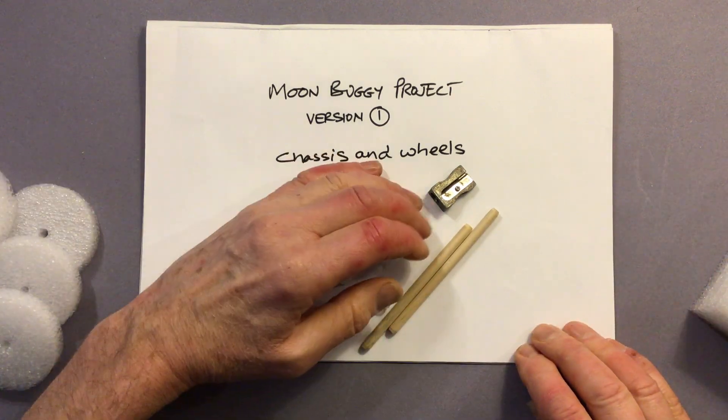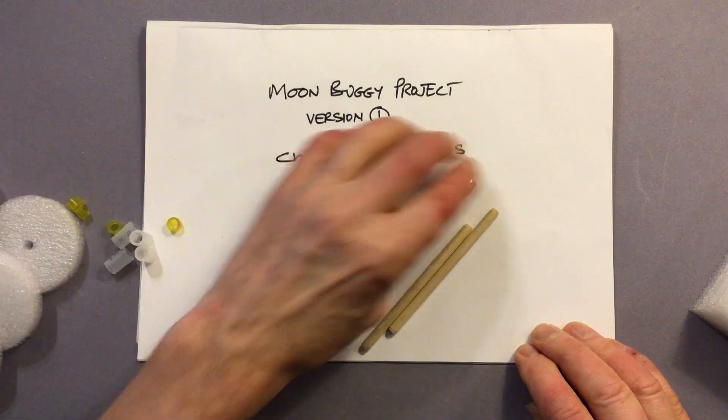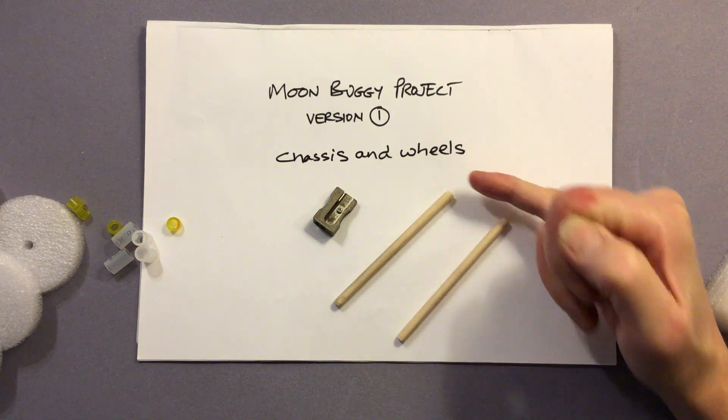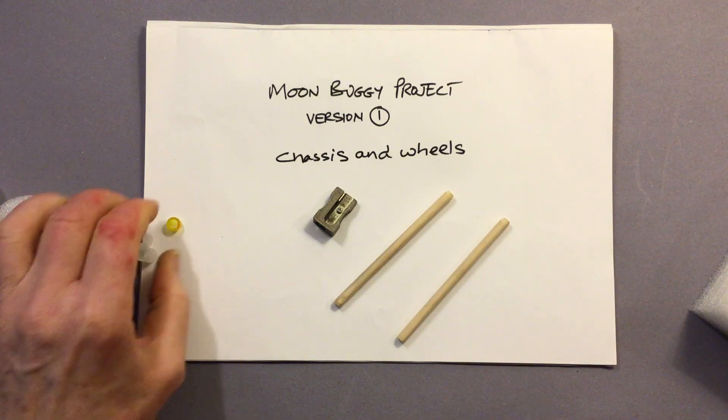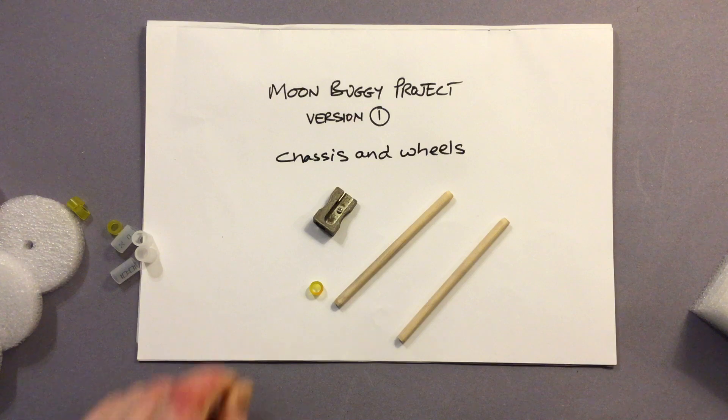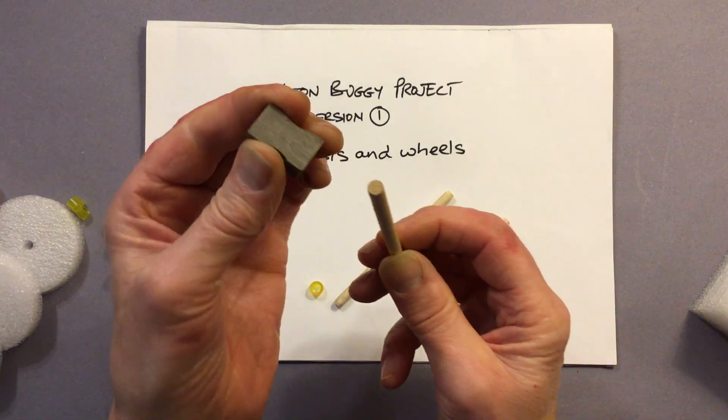So we'll start with these little wooden axles and a pencil sharpener. What we need to do is just shave off a tiny little bit from the ends of the axles so that these little axle clips can fit. It really is a very small amount.